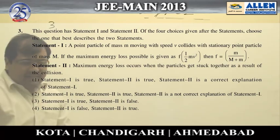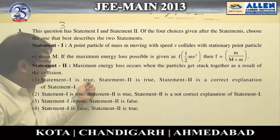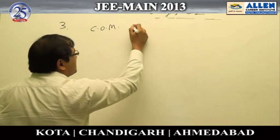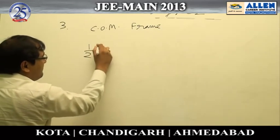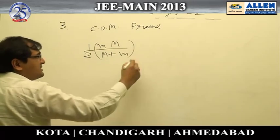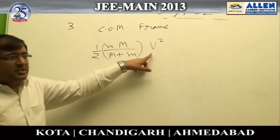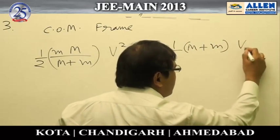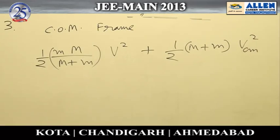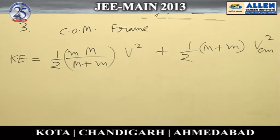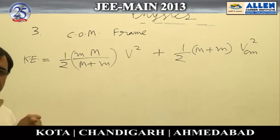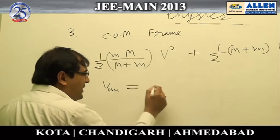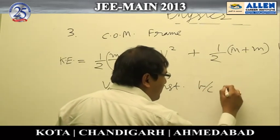Solution to question number three: they are asking about the loss of energy in a collision. The best approach is to write energy in the center of mass frame. The energy of the system in the center of mass frame is (1/2) × (mM/(m+M)) × v_rel², where the reduced mass is used and the relative velocity is v (since one particle is at rest). The kinetic energy associated with the center of mass velocity V_cm cannot change because momentum is conserved.